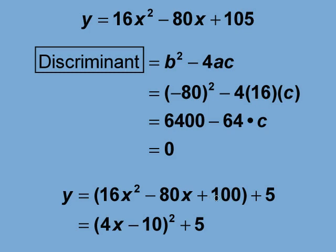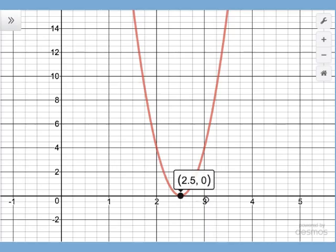This term becomes a perfect square as shown here. The graph of the perfect square function shows the single root of x equals 2.5.